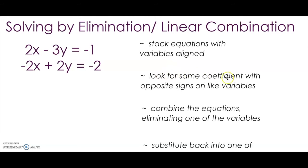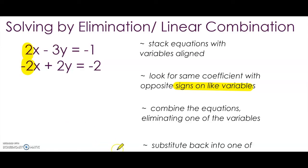We want to look for the same coefficient with opposite signs on like variables — the same coefficient with opposite signs on the same variable. Y has a negative 3 and a positive 2; those are not alike but opposites. But here with our X's, we have a 2 and a negative 2. When we combine these, that will allow us to eliminate the variable X.